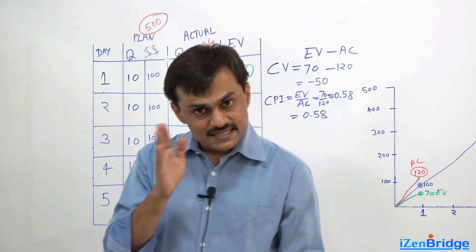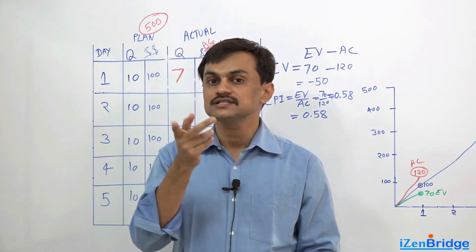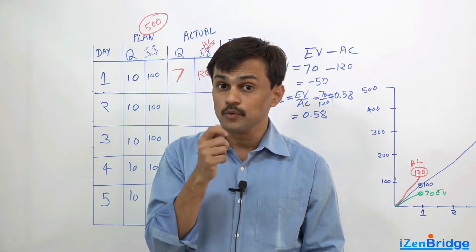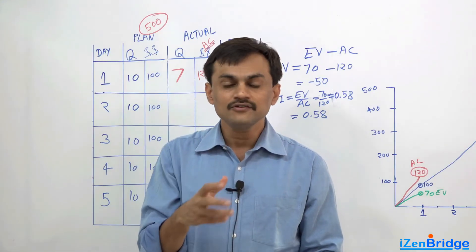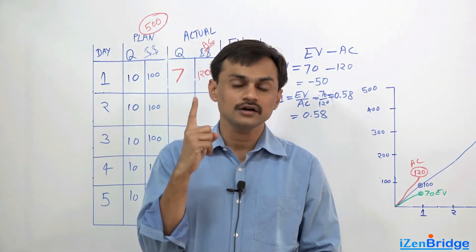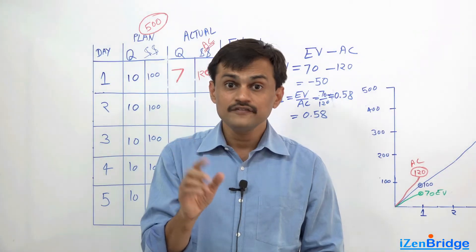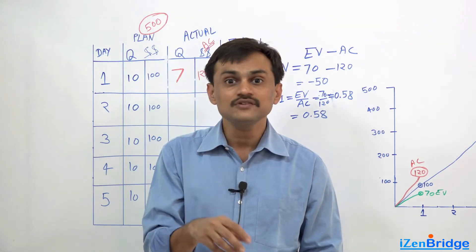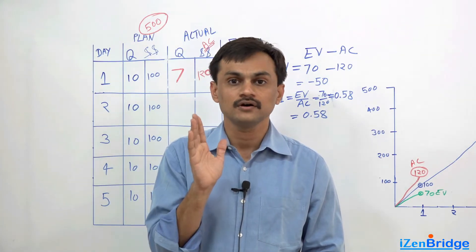Now how much less than 1 also shows the similar amount of inefficiency. If it is 0.5, it shows that we are getting 50 cents out of $1, we are that behind. If it is 0.2, it shows that we are getting 20 cents out of $1.